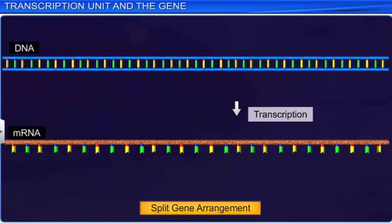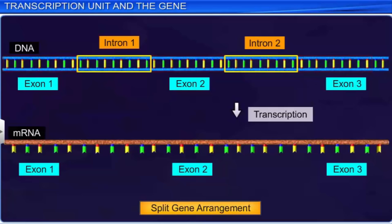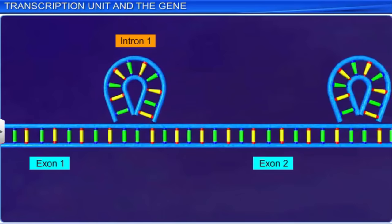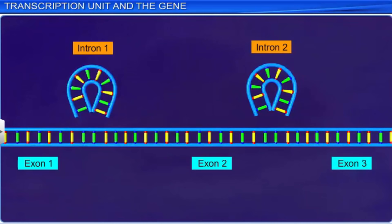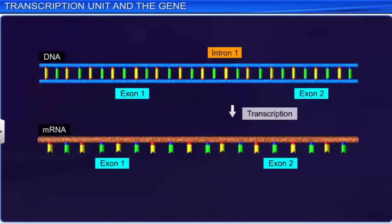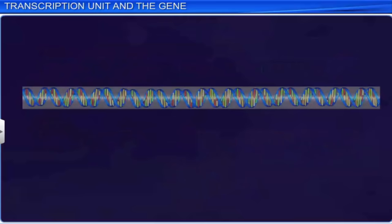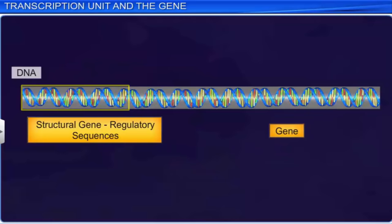The monocystronic structural gene has a split gene arrangement where sequences called introns and exons are present. However, in this gene arrangement, only the exons act as coding sequences. The process of transcription helps remove introns and joins exons as functional messenger RNA. It is the exons in the structural gene, along with the promoter, which determine the inheritance of a character. The structural gene also consists of regulatory sequences which regulate the functions of other genes but do not code for any RNA or protein — they are also known as regulatory genes.